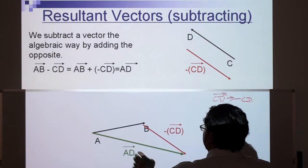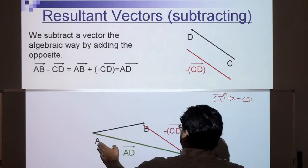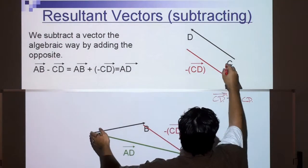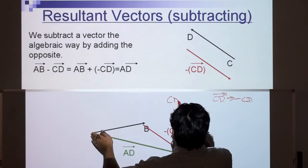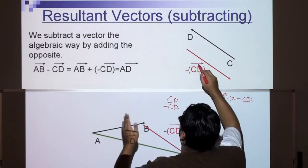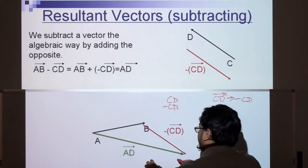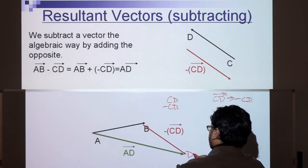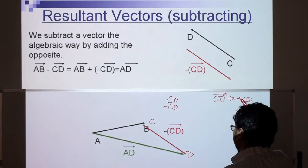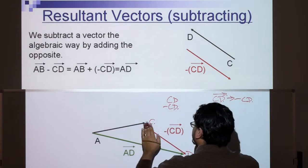Now what we're going to do here: AB take away CD. So we have AB here, take away CD. What we do is we just make, instead of CD, make it a negative CD. Change the direction and then we add. So we can add that plus the red one and then we get the new resultant vector of AD. So all you do is just change the direction of the second vector, which in this case is CD.